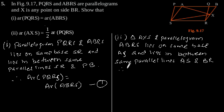Therefore, area of triangle AXS is equal to half of area of ABRS. This is our equation 2.